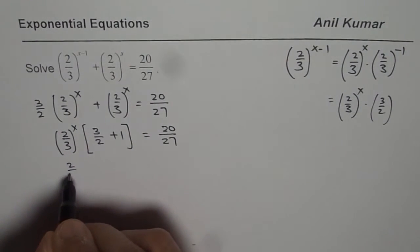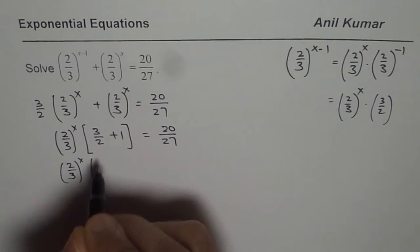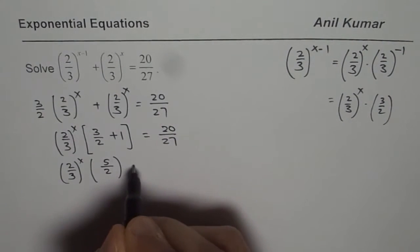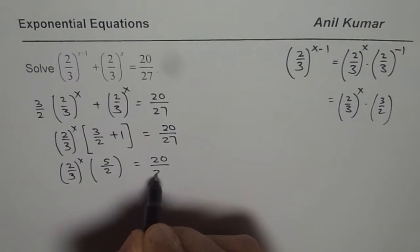So we get 2 over 3 to the power of x and what is this? 2 plus 3 is 5. It is 5 over 2 equals to 20 over 27.